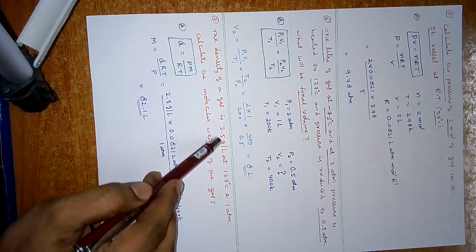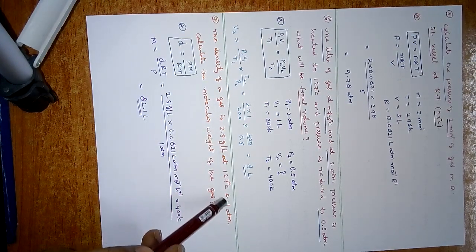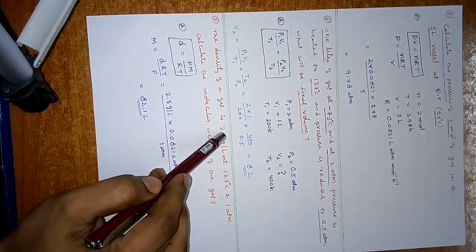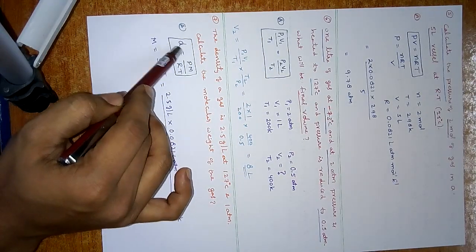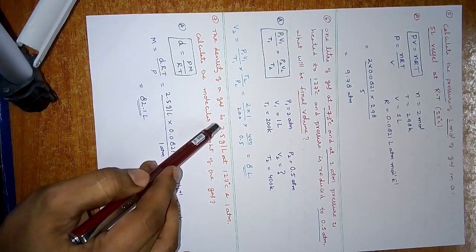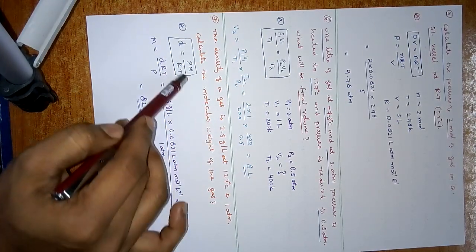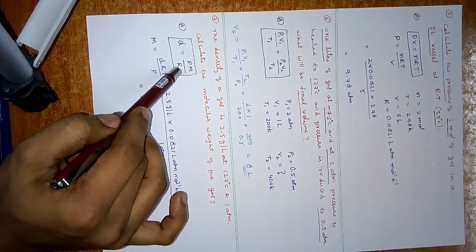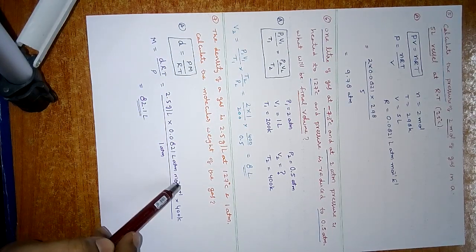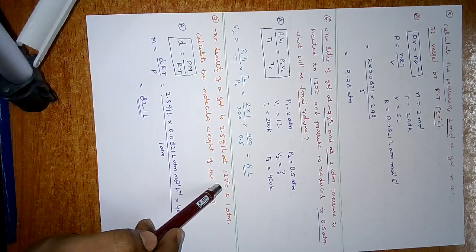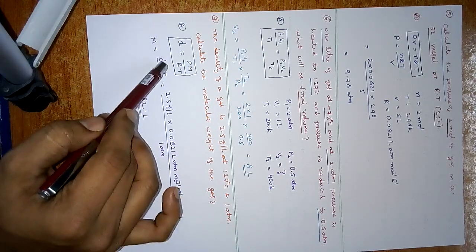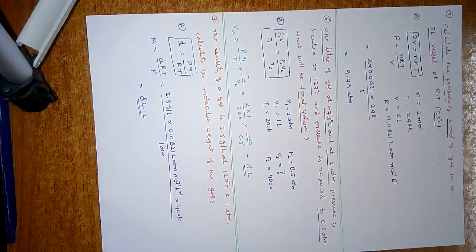Density of a gas is 2.5 g/L at 127°C and 1 atm. Calculate the molecular weight of the gas. Using the relation density = PM/RT. Density = 2.5 g/L, pressure = 1 atm, R = 0.0821 L·atm·mol⁻¹·K⁻¹, temperature = 127°C = 400 K. Substituting D, R, T, and P, we will get the molar mass of the gas.